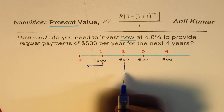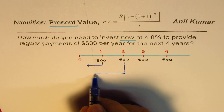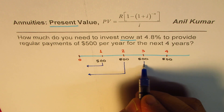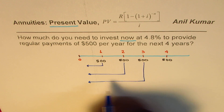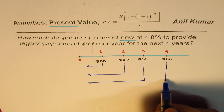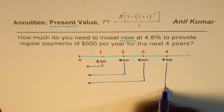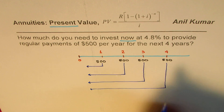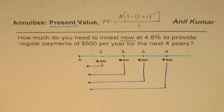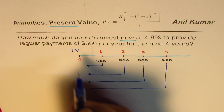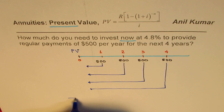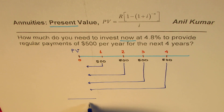So what is the present value of the $500 we'll get after two years? What is the present value of $500 after three years? And what is the present value of the last $500 after four years? That is what we want to figure out. When you add all of them up, you get your answer — that is the amount you will be investing.